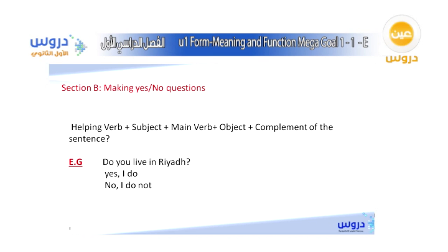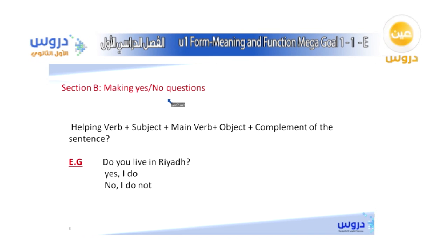Now we'll move on to how to make a yes/no question with the simple present or simple past tense. To make a question is very easy: begin with the helping verb, then the subject, then the main verb, then the object and complement. Since we are talking about simple present or simple past, the helping verb will always be either 'do,' 'does,' or 'did.' For example: 'Do you live in Riyadh?' — Yes, I do. Or no, I don't. Any question that starts with the helping verb is called a yes/no question.